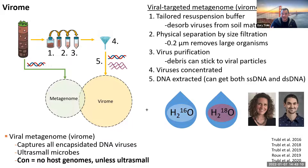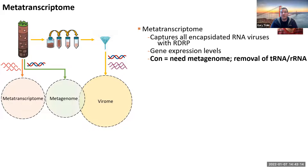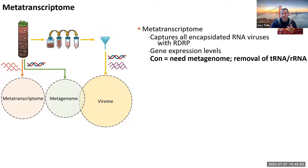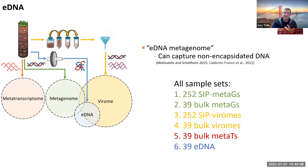We also added a metatranscriptome because RNA viruses are super important. For mammals and humans they dominate the literature, but in environmental systems like soil or water they've been missed - we've mostly only looked at double-stranded DNA viruses. Recent studies are beginning to look at RNA viruses, so I wanted to capture these from the same sample. This will capture all RNA viruses and also provide gene expression data for the host and DNA viruses. We're still limited by having to remove tRNA and rRNA because they swamp the signal, so we lose a little information there.